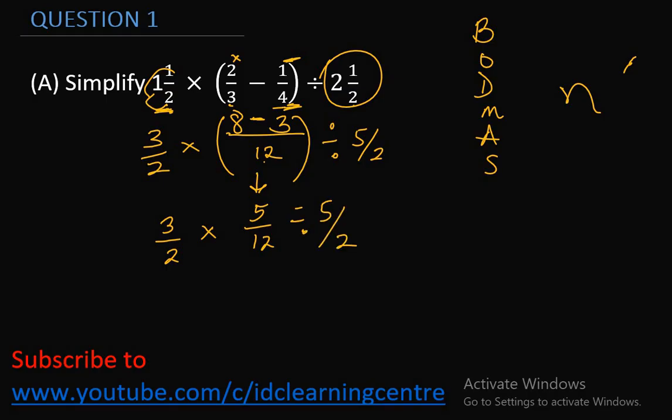Now, we are done with the bracket. Following the rule of BODMAS, the next aspect we are going to look at is division, since division comes before multiplication. We use the concept of KCF for division. KCF simply means keep the first fraction, change the division sign to multiplication. The C stands for change and F is for flip.